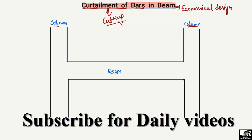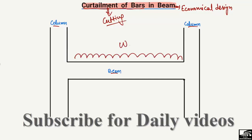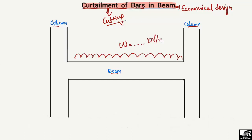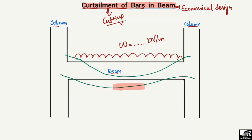How does curtailment work in a beam? If we consider a beam with a uniformly distributed load W in kilonewtons per meter acting on it, the beam will try to bend and will show bending stresses. As a flexure member, it will show a bending arc. We will have positive bending moment at mid-span and negative bending moment at the extreme ends of the beam.